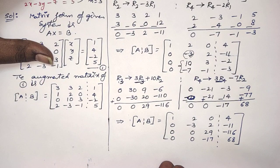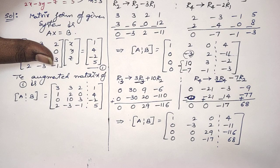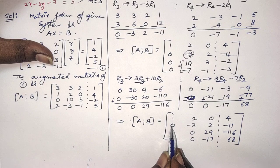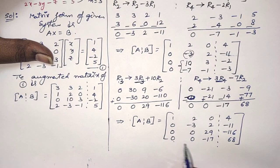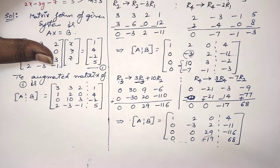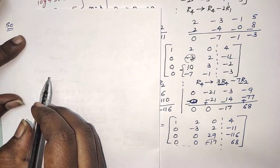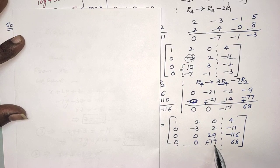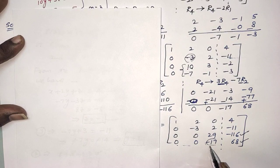Now we observe that A and [A|B] are not yet in echelon form, because the number of zeros does not increase row by row. Row 1 has one leading zero, row 2 has two zeros, but row 3 also has only two zeros. In the last row we should get at least three zeros. That's why we have to make this element also zero.